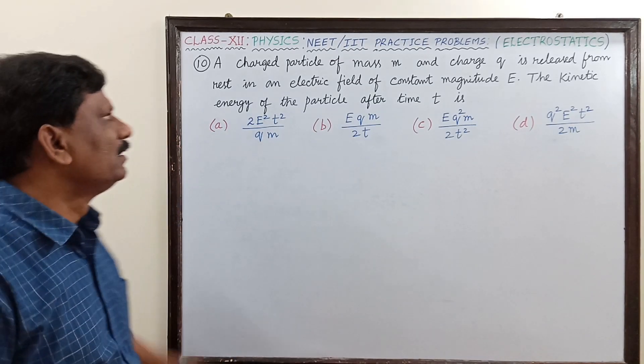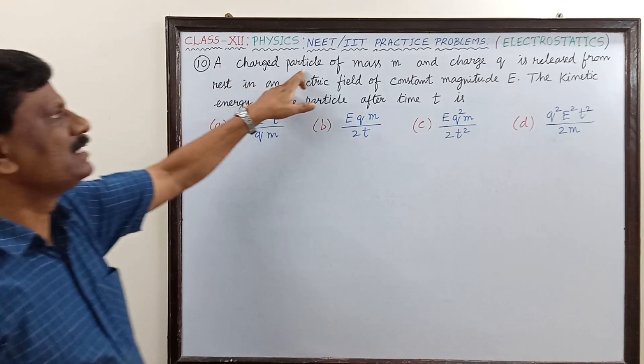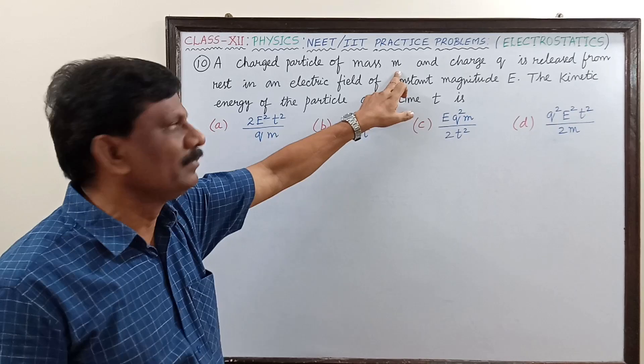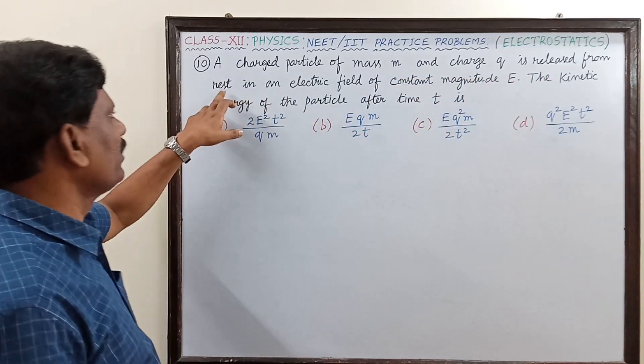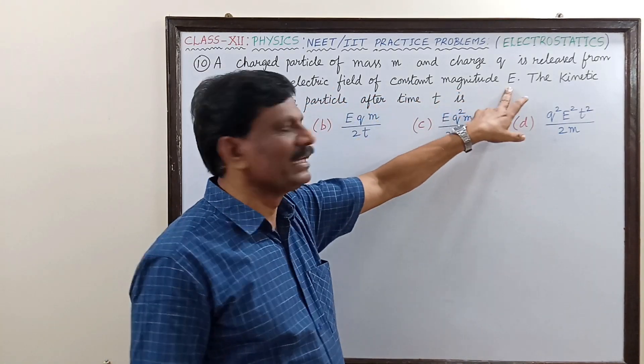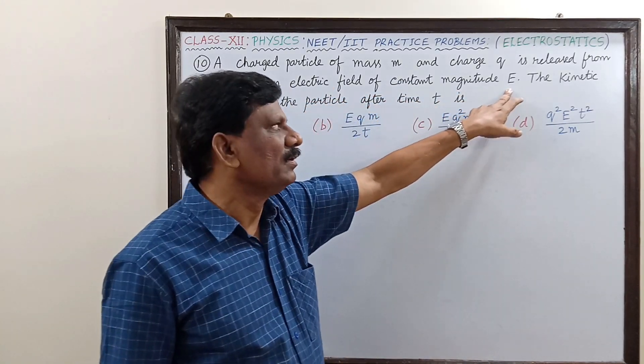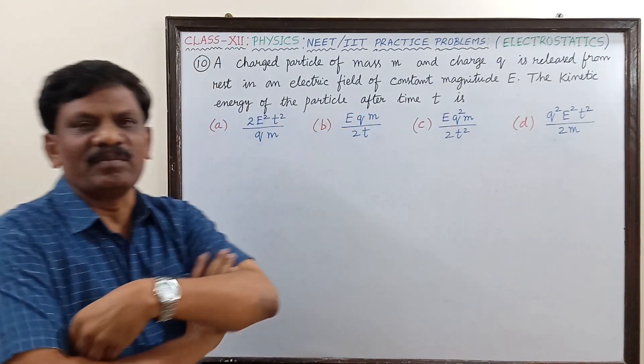Hi students, MCB number 10. A charged particle of mass m and charge q is released from rest in an electric field of constant magnitude E. The kinetic energy of the particle after time t has to be determined.